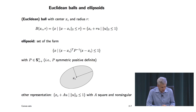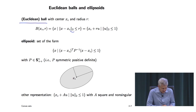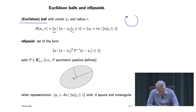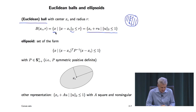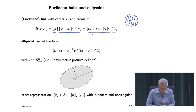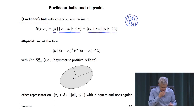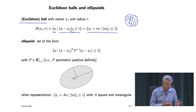A Euclidean ball uses the 2-norm: B(xc, r) = {x | ‖x - xc‖_2 ≤ r}, where xc is the center and r is the radius. It can also be written as {xc + r*u | ‖u‖_2 ≤ 1}. This is convex, though the proof is omitted here.